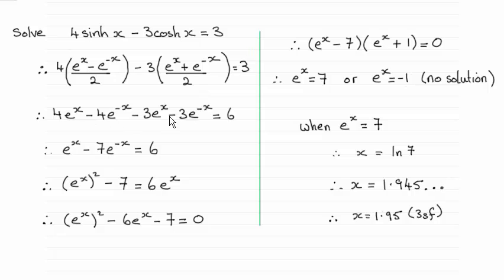And then I could see that e to the minus x, which is 1 over e to the x, this would lead to a quadratic equation in e to the x if I multiply throughout by e to the x. So that leaves me to this line.